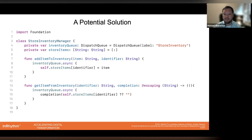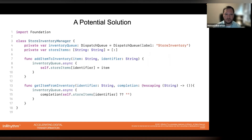This is a problem that developers have been trying to solve for some time. One of the ways to solve the data race problem historically was to use dispatch queues. The class has been modified to use a dispatch queue to asynchronously read from and write to the store items dictionary via the add-items-to-inventory and get-item-from-inventory methods. Because this queue is asynchronous, we can no longer just return the inventory item — we have to wrap that value in a completion handler. This adds complexity to the class and makes it more difficult to maintain moving forward.